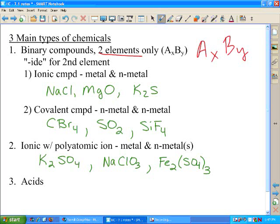Any format like that is only going to be named a certain way. Very simple. For binary, it gets an IDE ending for the second element. That's it. We name the first element, second element gets the ending IDE. So the two types of binary compounds we're going to look at, ionic compounds that have only two elements, and covalent compounds that have only two elements.